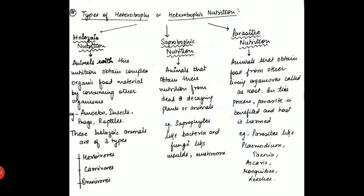Hi everyone. In the previous lecture we covered nutrition and its types, amongst which we studied autotrophic and heterotrophic nutrition. In autotrophic nutrition, plants make their own food and provide us with food. In heterotrophic nutrition, animals depend upon other organisms for their food.